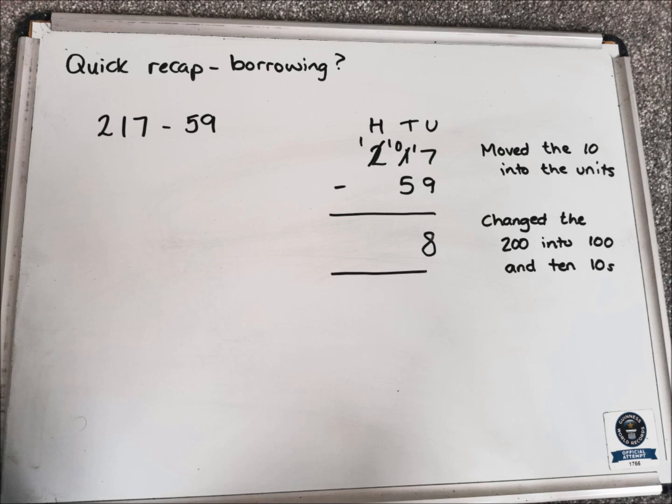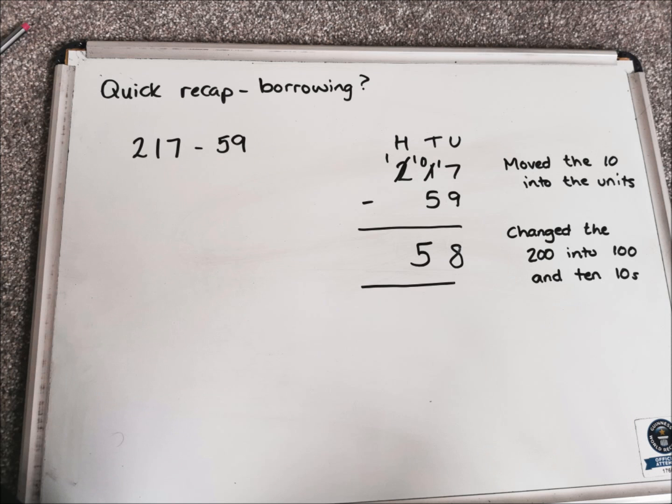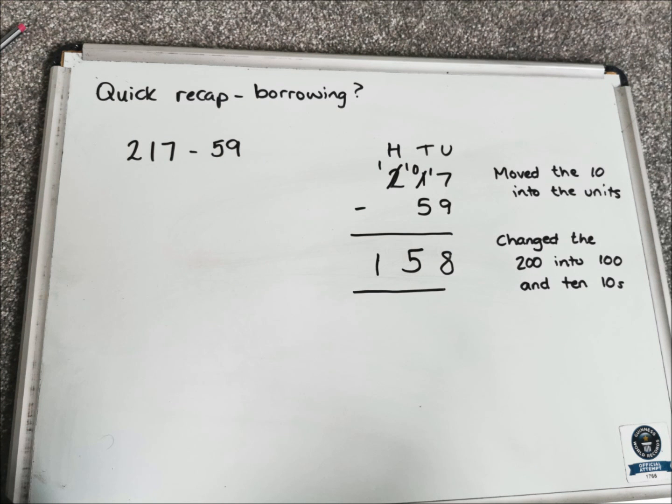So the 2 becomes 1 and move 1 over into the tens column. What we've done there is we've changed the 200 that was in the hundreds column into 100 and 10 tens. So now in the tens column, we've got 10 take away 5, which is 5. And in the hundreds column, we've just got 100 take away nothing. So the total answer is 158.